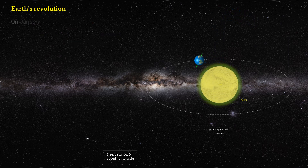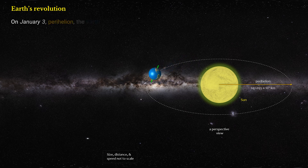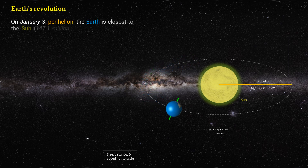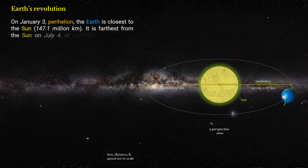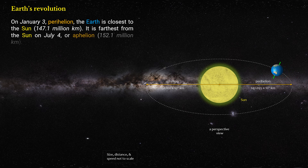On January 3rd, perihelion, the Earth is closest to the Sun at 147.1 million kilometers. It is farthest from the Sun on July 4th, or aphelion, at 152.1 million kilometers.